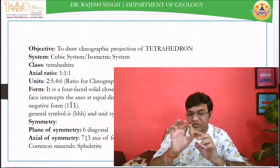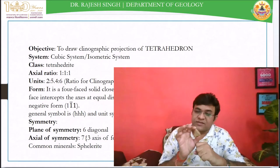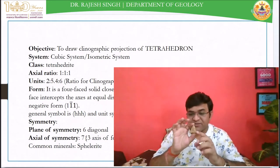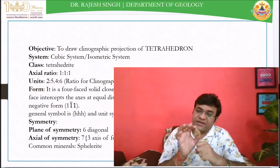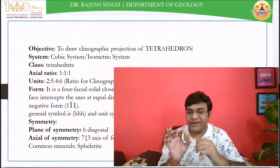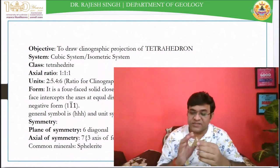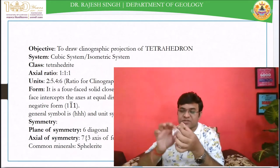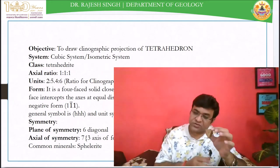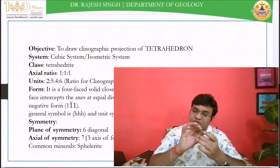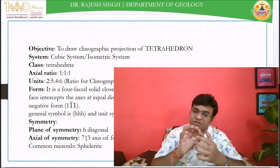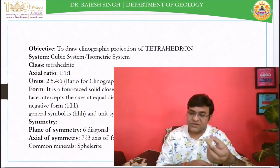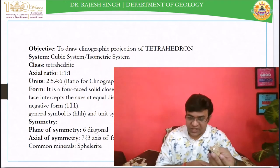The Hermann-Mauguin symbol of the tetrahedron is 4̄3m. M represents the six mirror planes, 3 represents the four axes of threefold symmetry, and 4̄ means there are three crystallographic axes showing fourfold roto-inversion. The general symbol of this crystal is {hkl}, similar to the octahedron.